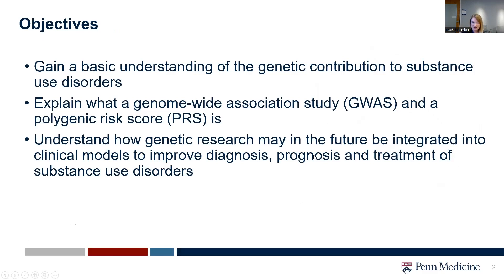The objectives for today are to gain a basic understanding of the genetic contribution to substance use disorders. Hopefully you'll be able to explain simply what a genome-wide association study, or GWAS, is, and what a polygenic risk score, or PRS, is. And finally, you'll be able to understand how genetic research may in the future be integrated into clinical models to improve diagnosis, prognosis, and treatment of substance use disorders. This is the ultimate goal of my research, but as you will see, it's not at that stage yet.